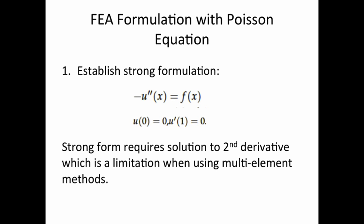For the Poisson equation, step one is to establish the strong formulation. The equation u''(x) = f(x) is the strong form. The boundary conditions are u(0) = 0, which is a Dirichlet condition, and u'(1) = 0, which is the Neumann boundary condition. These are mixed boundary conditions because there are two different types. The reason you can't just use the strong form for this method is because it requires a solution to the second derivative, which creates a limitation.